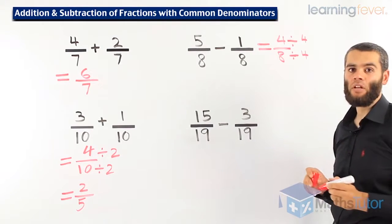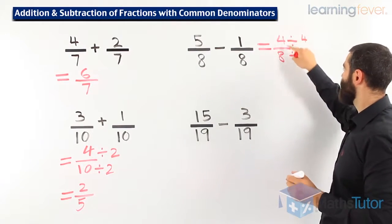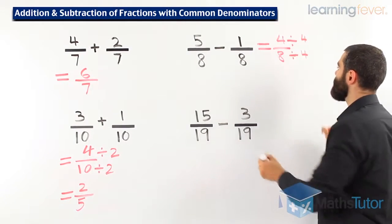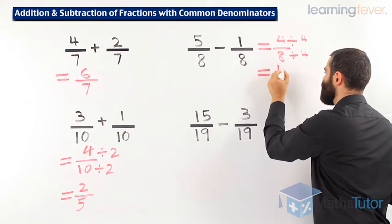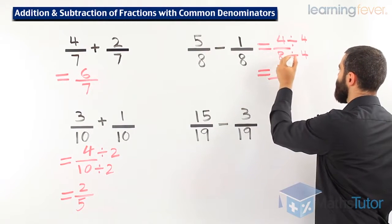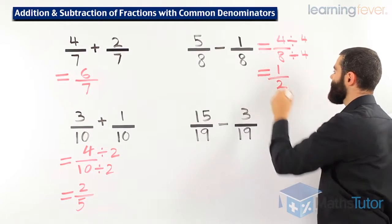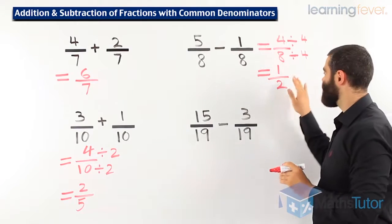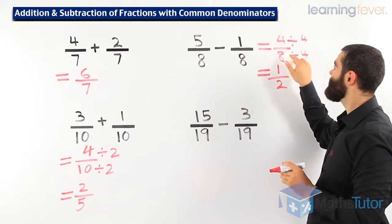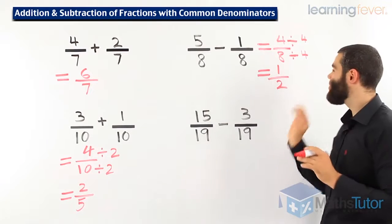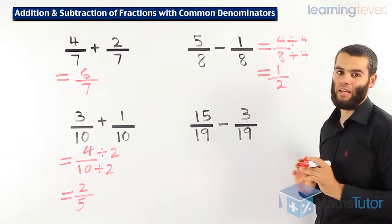So the highest common factor in 4 and 8 is 4, 4 goes into 4 once, and 4 goes into 8 twice. Our answer is 1 half. That is the correct answer. You're going to lose marks if you keep it like that. You may even get it wrong. You must simplify it all the way to the end.